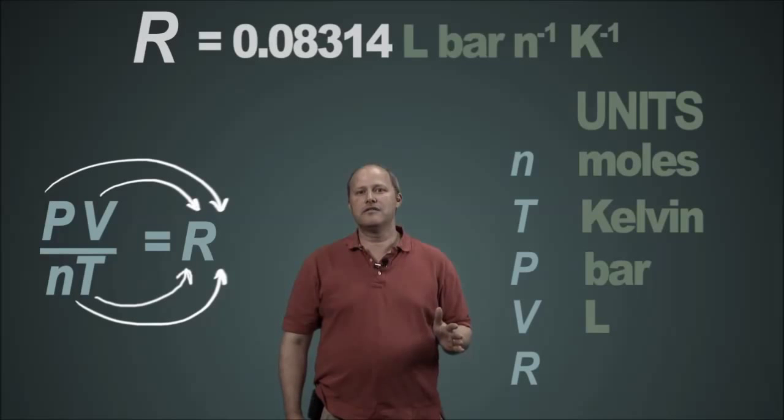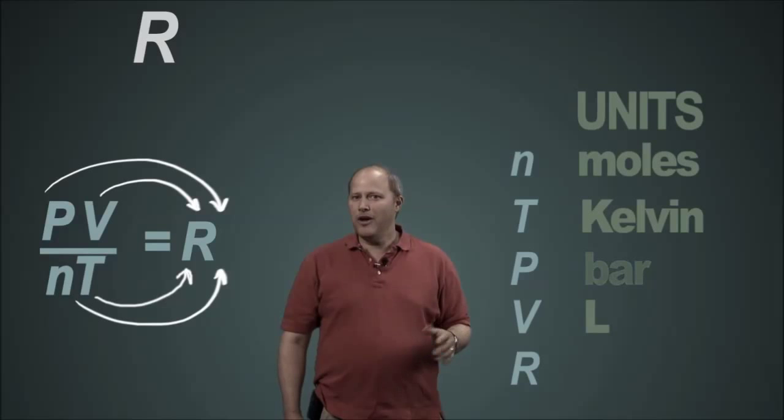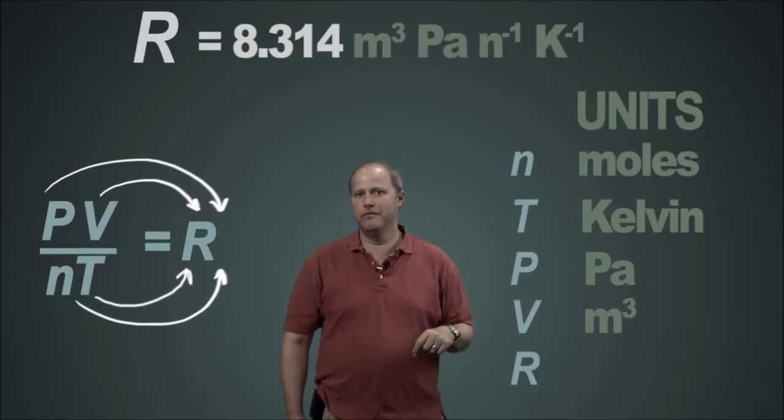But if you had pressure of bars, it's 0.08314 liter bars per Kelvin mole. Or alternatively, maybe you have Pascal cubic meters, then it's 8.314. And so the answer to which is the correct one, it's the one that makes the units work for the pressure and the volume that you're working with.